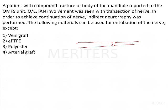We want to ensure that the nerve regenerates and is able to get back together. This is called neurography, where we try to get the two ends of the nerve together and ensure continuity of the nerve again. If there is no neurography performed, there may be a possibility of traumatic neuroma, where the cut ends of the nerve start proliferating and form a huge bulbous mass, causing the patient to complain of paresthesia.